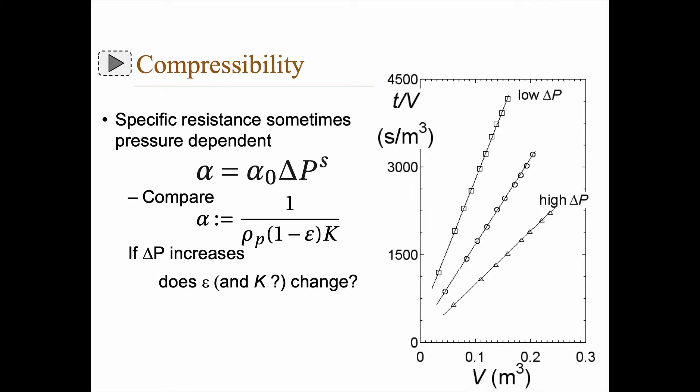But if delta P increases, what happens with the porosity, and for that matter the permeability? Isn't it so that if we increase the pressure, we might actually decrease the porosity of the cake? And that might in turn change the permeability, right? So there is something going on here.